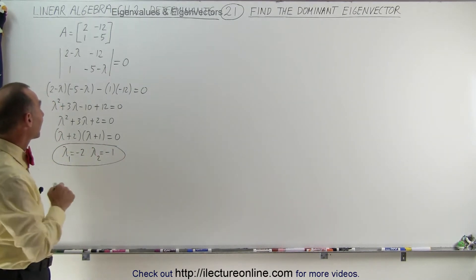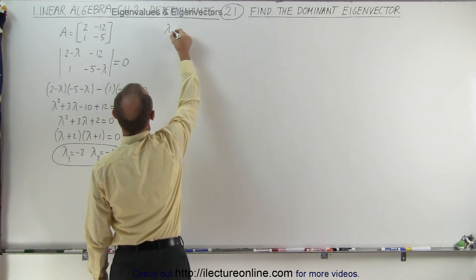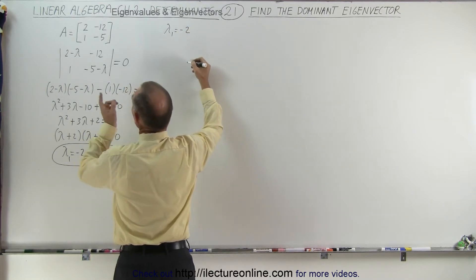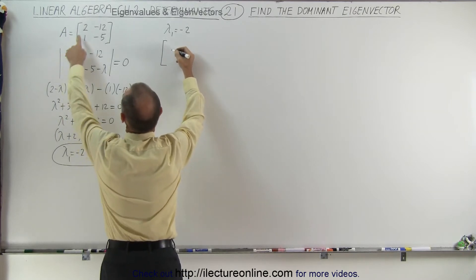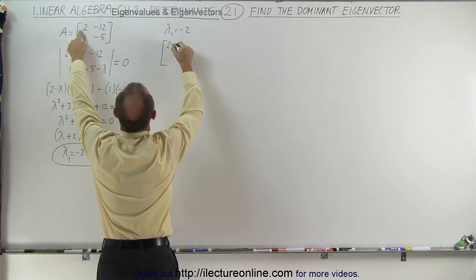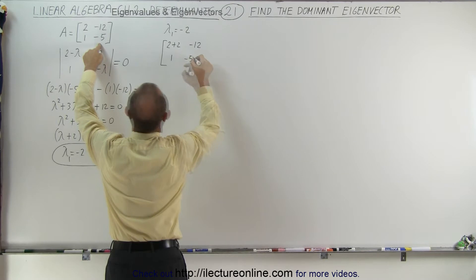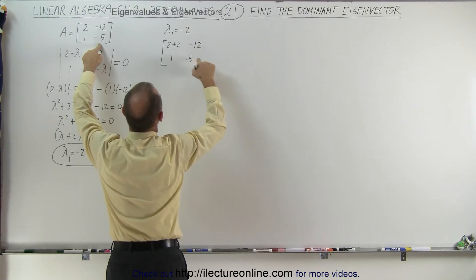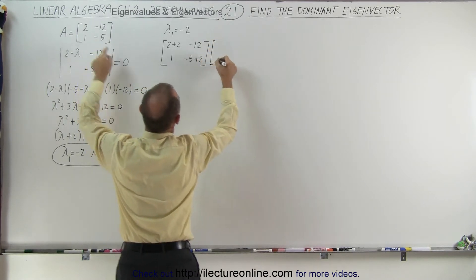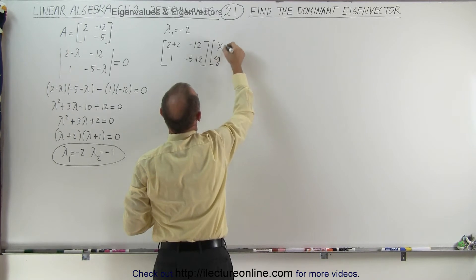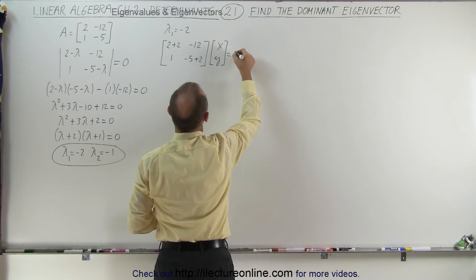Now we'll use those to find the two eigenvectors, starting with lambda₁ equals minus 2. We subtract minus 2 from the diagonals: (2 minus (minus 2)) gives plus 4, minus 12 on top, 1 on the bottom left, and (minus 5 minus (minus 2)) gives minus 3. We multiply this matrix times the eigenvector [x, y] and set it equal to zero.